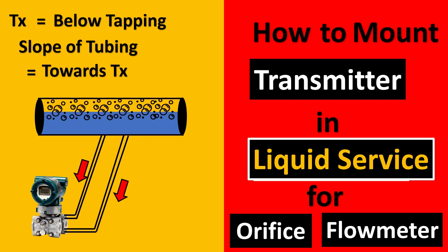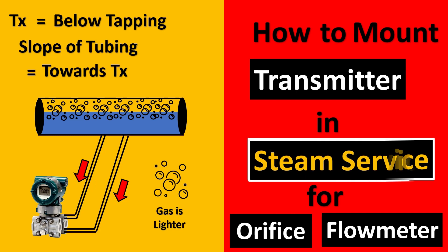Why? Because you want the liquid to be trapped here and if there is any gas which is lighter, it will always stay up and it will never come to your transmitter and thus the gas would not get trapped inside your impulse lines.